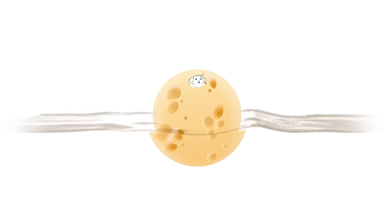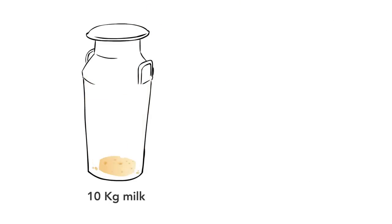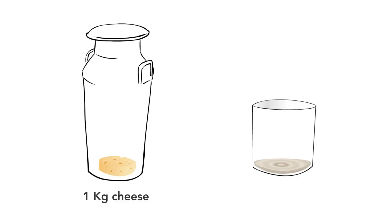Whey is a by-product of cheese production. And there's a lot of it. For most varieties of cheese, you need 10 kilograms of milk to produce 1 kilogram of cheese, leaving you with 9 kilograms of whey. That's a 10 to 1 ratio.